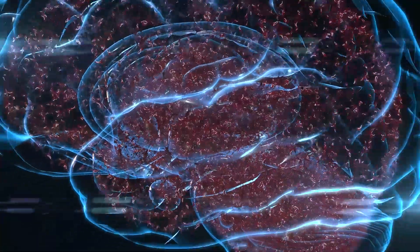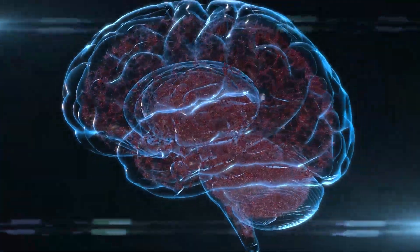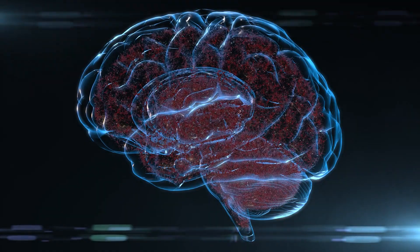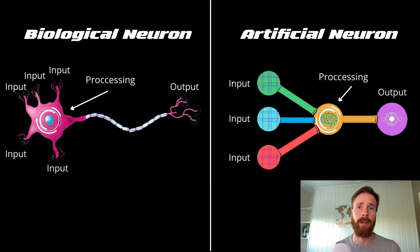Billions of neurons in your brain are connected to each other in what is called a biological neural network. This is how your brain processes information and recognizes patterns.